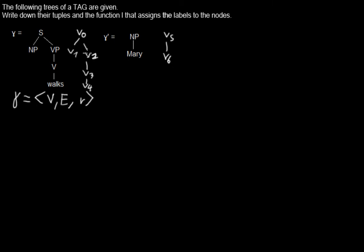So now we can just write the sets down for Gamma. Here the set of nodes for Gamma will be all the nodes we have in this tree. So we have V0, V1, V2, V3, and V4.